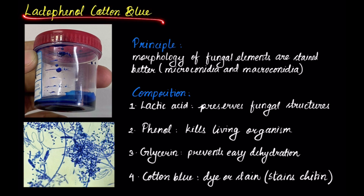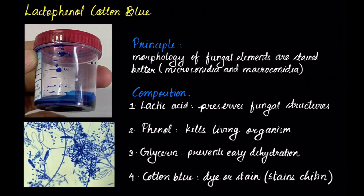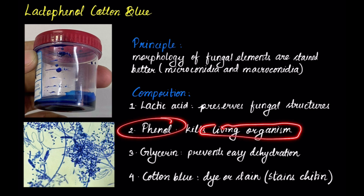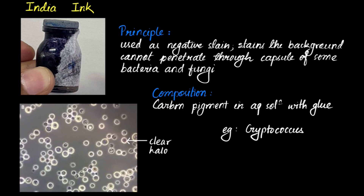Lacto phenol cotton blue is used to stain the fungal elements that remain after debris are eliminated by 10% KOH. It stains those fungal elements better than methylene blue, allowing you to observe micro and macroconidia under the microscope. It is composed of lactic acid, which preserves fungal structure; phenol, which kills non-fungal living organisms; glycerin, which prevents dehydration; and cotton blue, which is the dye that stains chitin.